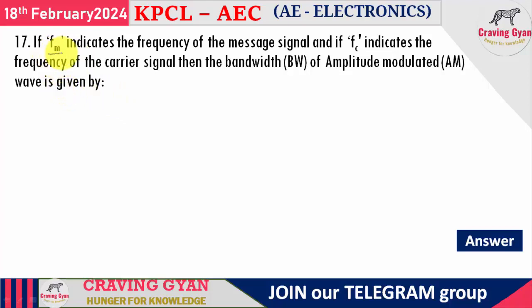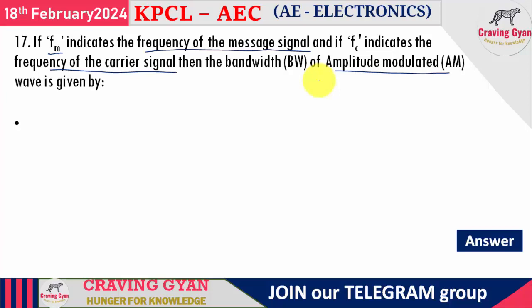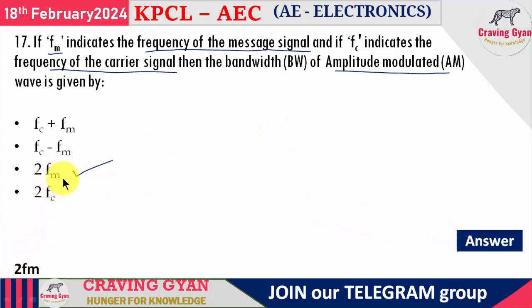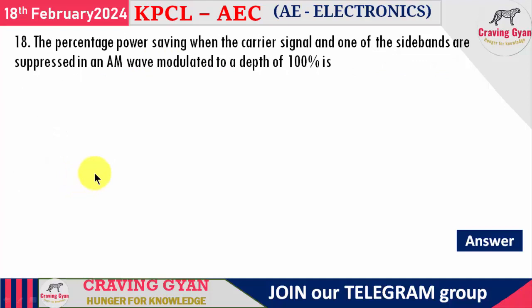Seventeenth question: if f_m is the frequency of the message signal and f_c is the carrier frequency, the bandwidth of an amplitude modulated wave is 2 × f_m. Options given are f_c + f_m, f_c - f_m, 2f_m, and 2f_c. The answer is 2 times the message frequency — option C.